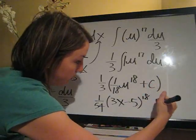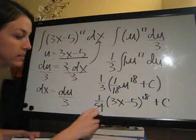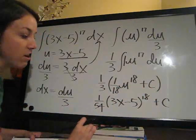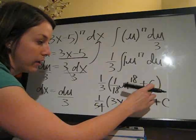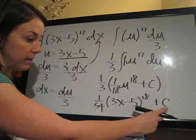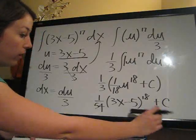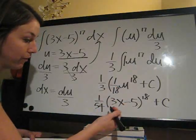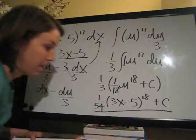And then plus c. And the reason I didn't multiply the 1 third times the c is because c stands for any constant. So the 1 third really just falls off the front of that c, and c stands alone. So I only applied the 1 third here to the 1 over 18, and that's the final answer.